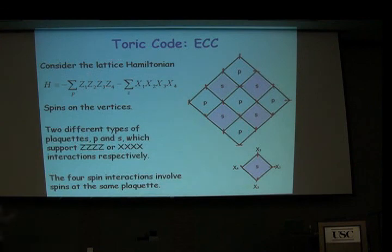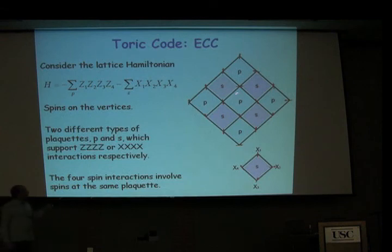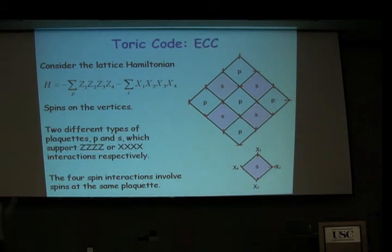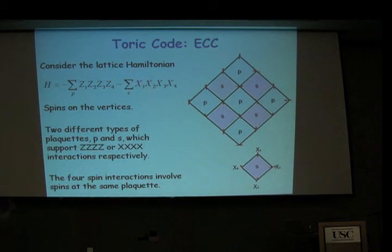The model we'll look at is the Toric code. As we've already seen, I have a lattice of qubits — a square lattice — but now the qubits are sitting on the vertices. I have P and S plaquettes: P plaquettes have Z⊗Z⊗Z⊗Z interactions on the four qubits, and the S plaquettes have X⊗X⊗X⊗X interactions.